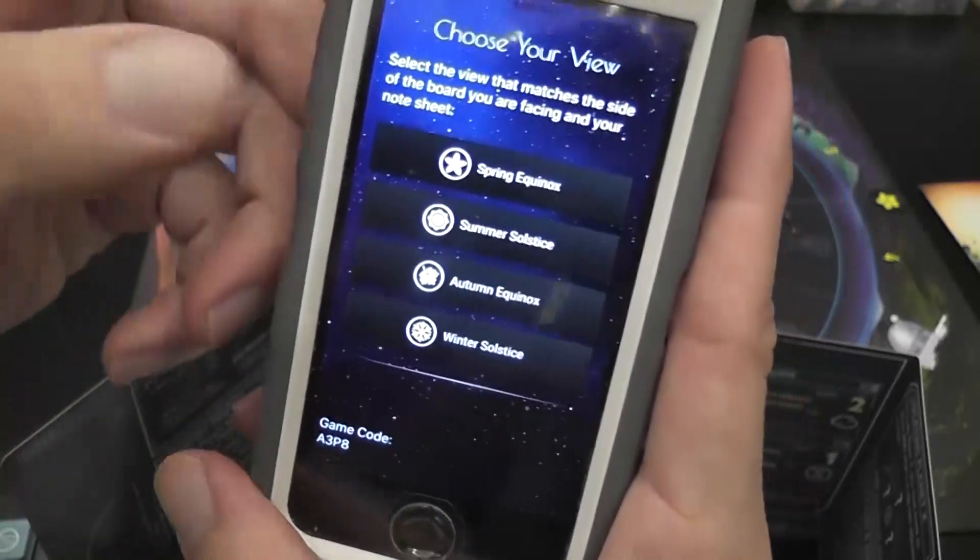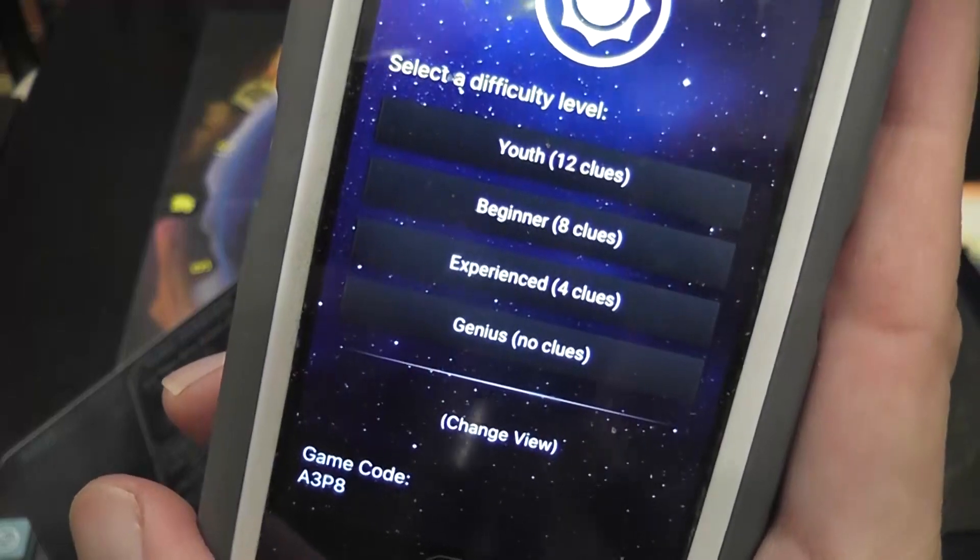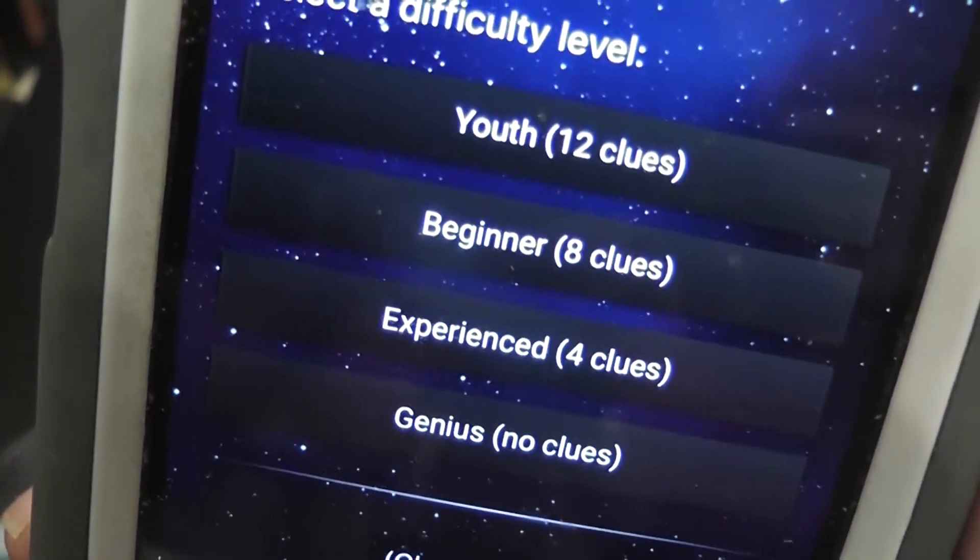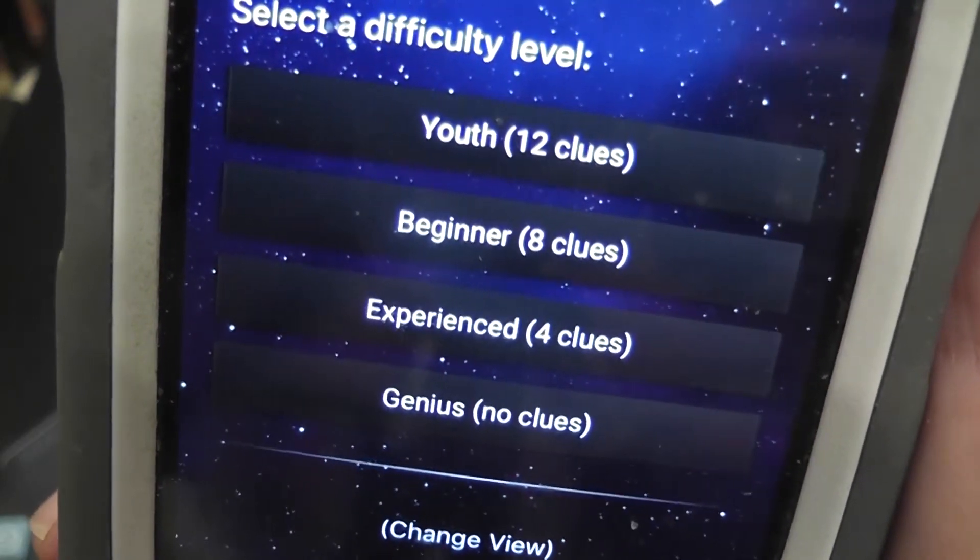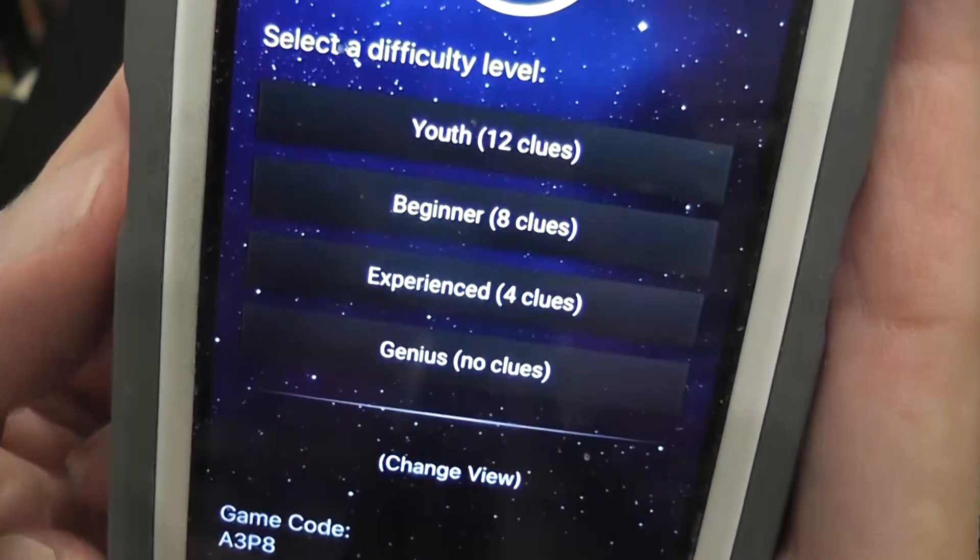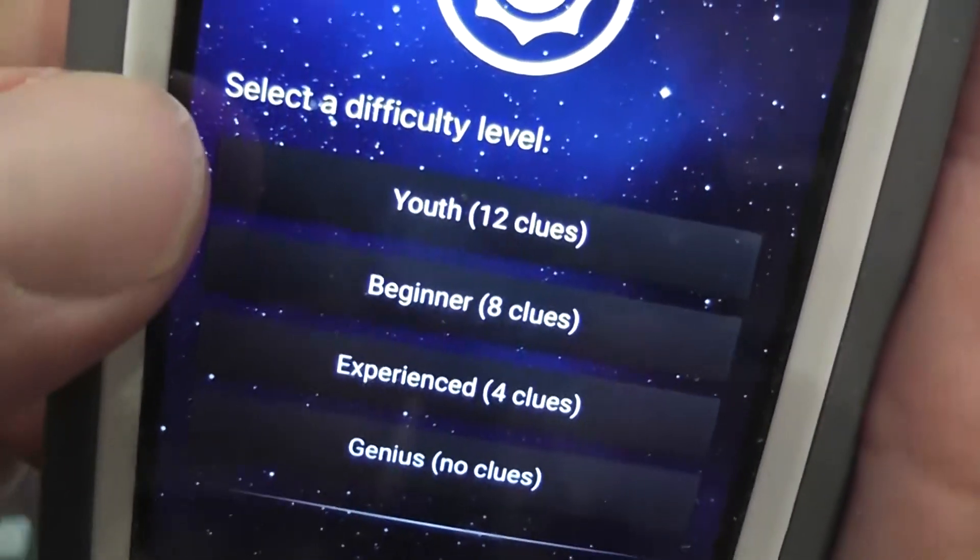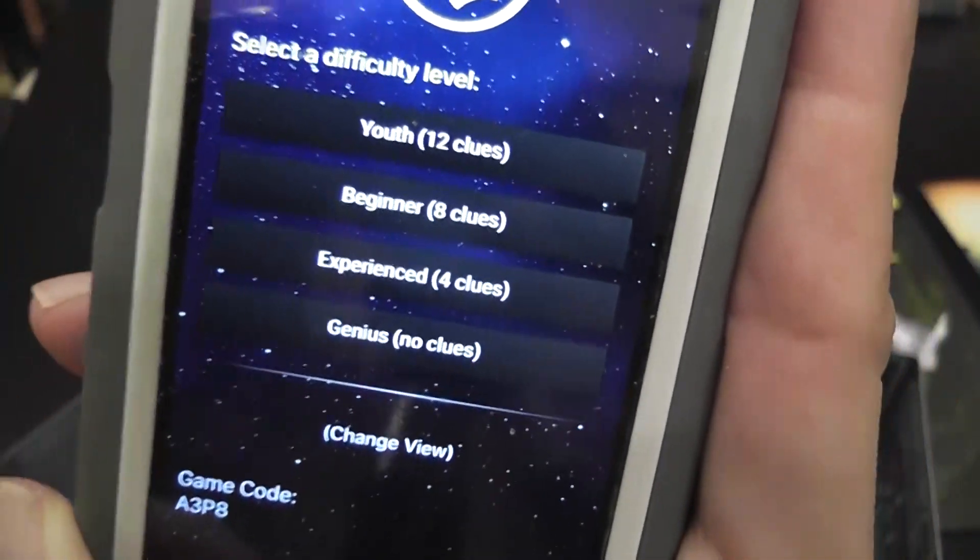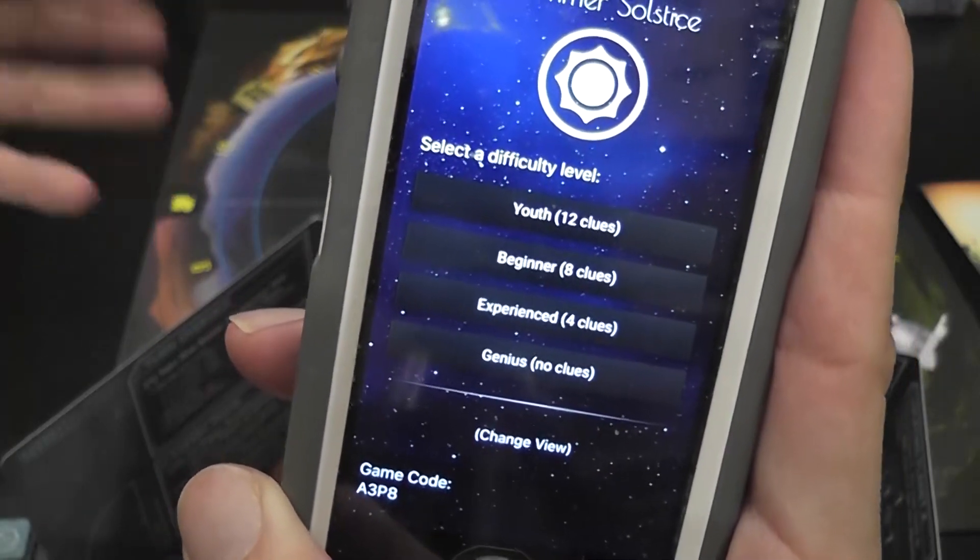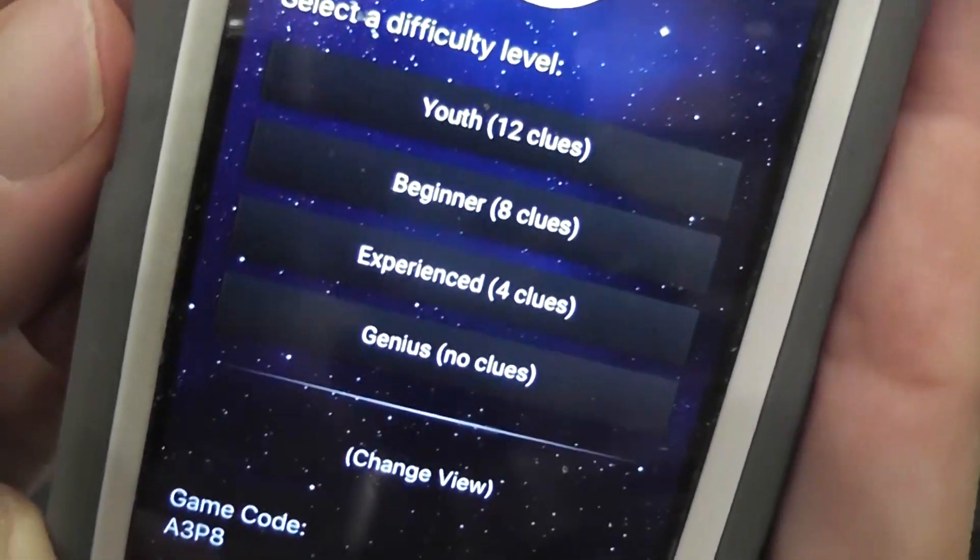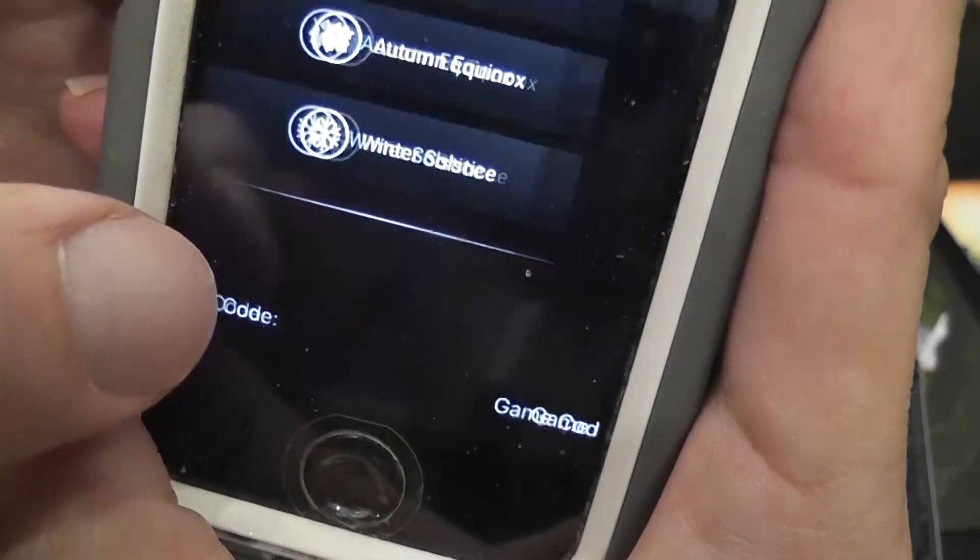This is simply to determine the orientation of the board based on where we're sitting. And now this is also interesting. You determine the level of difficulty that you want to play at based on the number of clues that you have originally, initially. That means that actually each player can have a different set of initial clues, which also means that each player can play at different levels of difficulty. This is a game that you can play with your children and actually have an honest level of challenge.